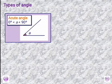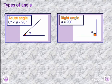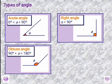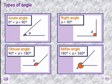That takes us to types of angles. First is acute angle — these are angles which are less than 90 degrees, and angle A is an example. Number two is right angle — this is an angle equal to 90 degrees, as you can see in the diagram. Number three, obtuse angle — angles greater than 90 degrees and less than 180 degrees. And reflex angle is an angle greater than 180 degrees and less than 360 degrees.